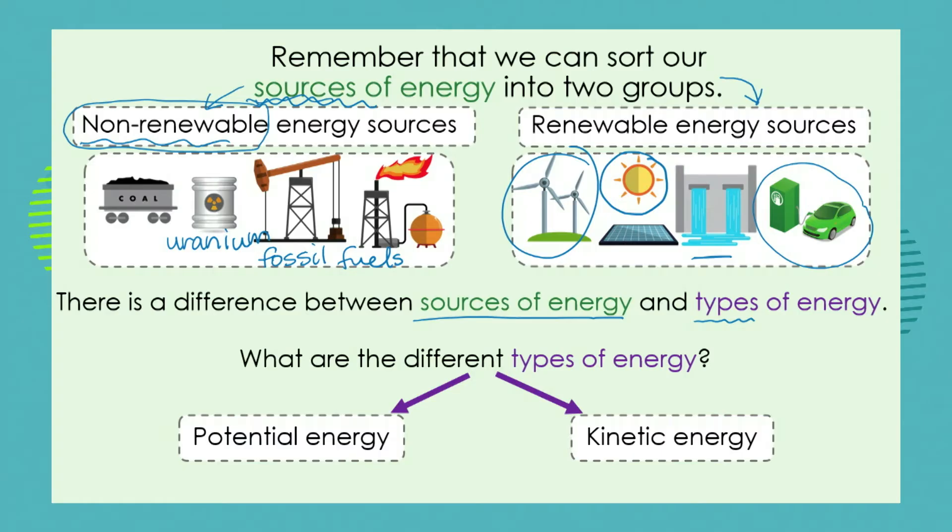We need to make clear that sources of energy is where that energy is coming from — the source, like the source of a river. But the type of energy is how we see it working in our environment. This is the evidence we have that energy is working, or that energy is allowing for work to happen.